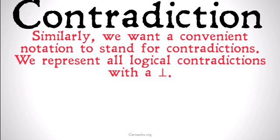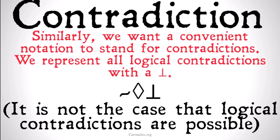Similarly, we want a convenient notation to stand for all contradictions. We're going to represent all logical contradictions naturally with the opposite of what we use for tautologies — an upside-down T (⊥). This kind of looks like a cannon pointing into the air, or what have you. Basically, it's the logical symbol for all contradictions. So if we wrote ¬◇⊥, that would mean it's not the case that logical contradictions are possible — or, there's no possible world in which logical contradictions are the case. Just as ⊤ stood for all tautologies, ⊥ stands for all contradictions.